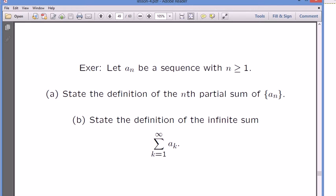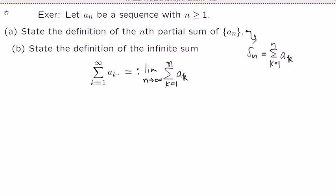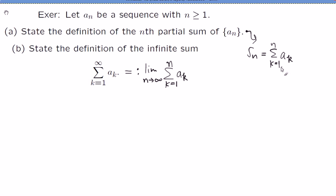Let's do this as very simple practice. A_n is a sequence starting with index 1. State the definition of the nth partial sum, denoted S_n. You have to use the dummy variable k, not n, just like the integral variable t. Your actual main variable goes upstairs. So it's not 'k equals 1 to n, a_n' — it's 'k equals 1 to n, a_k.'